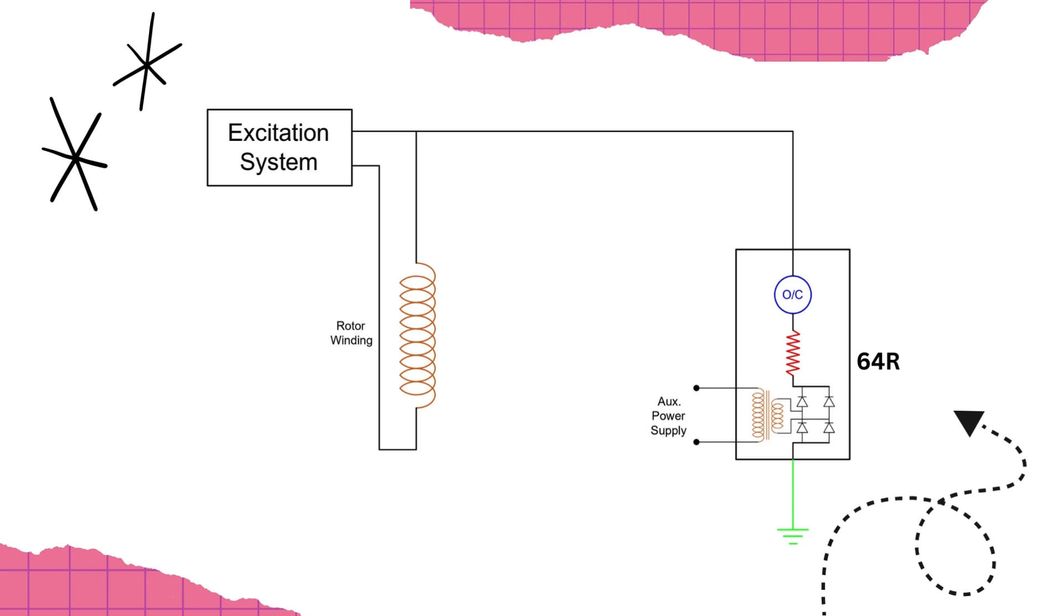But wait, before we delve deeper into the relay, let's get a grip on the rotor circuit. The rotor is insulated from the winding to the body of the rotor. This insulation behaves like a capacitor between the winding and the metal body.